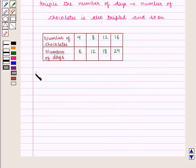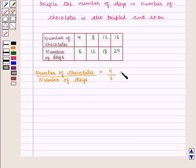And if we calculate the ratio of number of chocolates to number of days, we get 4/6 which is equal to 8/12 which is equal to 12/18 which is equal to 16/24, and we see that each ratio is equal to 2 upon 3.